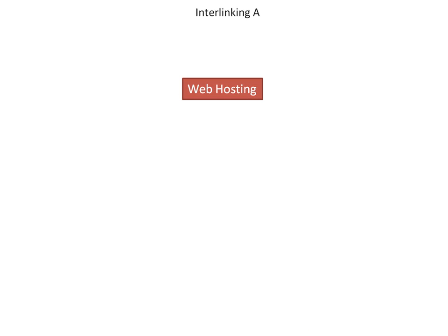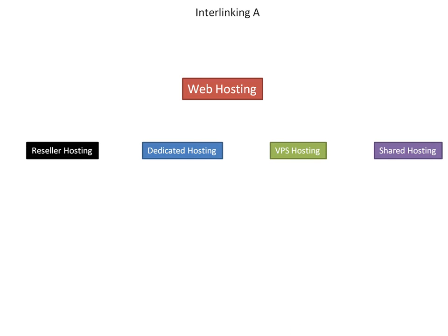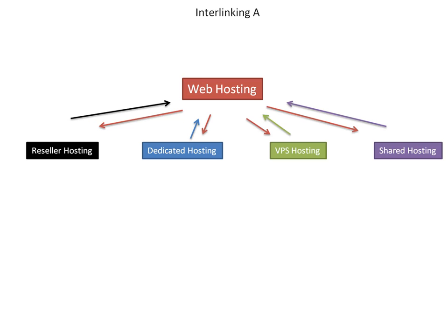Our web hosting page is going to be our main page. We've got our secondary keywords: reseller hosting, dedicated hosting, VPS hosting, and shared hosting. Our homepage — web hosting — is going to link out to each one of those secondary keyword pages. Likewise, the secondary keyword pages are going to link back to our homepage. So we've got four links from four different pages internally going to our homepage targeting web hosting, and four links going out from the web hosting page to each secondary page.